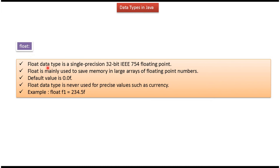Float data type is single precision 32-bit IEEE 754 floating point, and default value is 0.0f. Here you can see how to declare float. Float is mainly used to save memory in large arrays of floating point numbers.